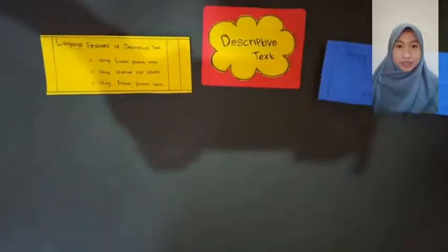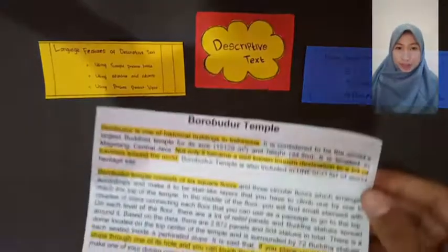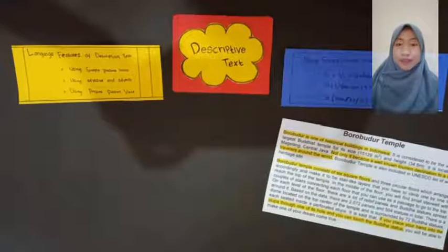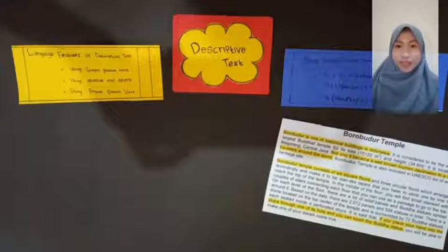The first language feature is using simple present tense. Dalam simple present, kita menggunakan verb one. Untuk subjek I, you, they, we, kita menggunakan verb one. For example: Borobudur is one of the historical buildings in Indonesia. Not only has it become a tourism destination, it attracts a lot of travelers. Borobudur temple consists of six square floors and is a place where you can place your hand into the stupa as a symbol of hope to the Buddha statue.